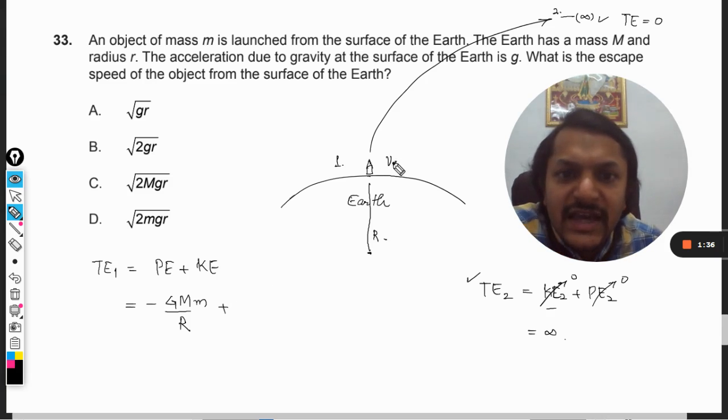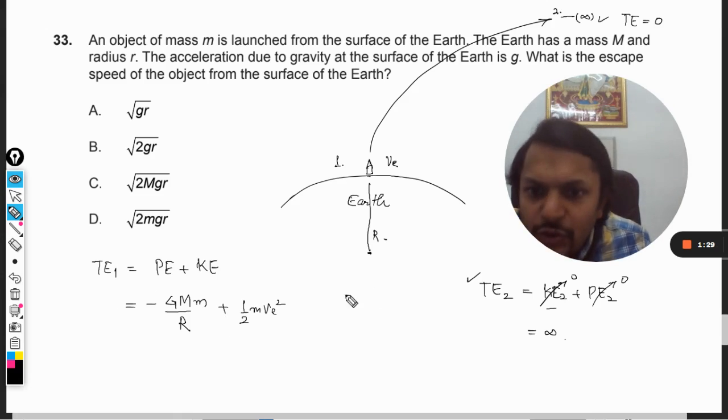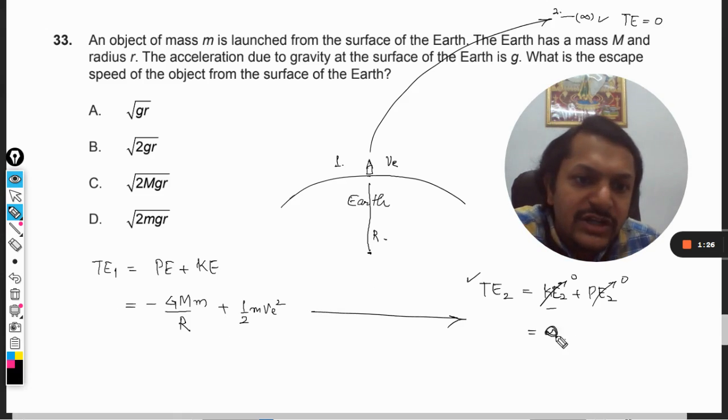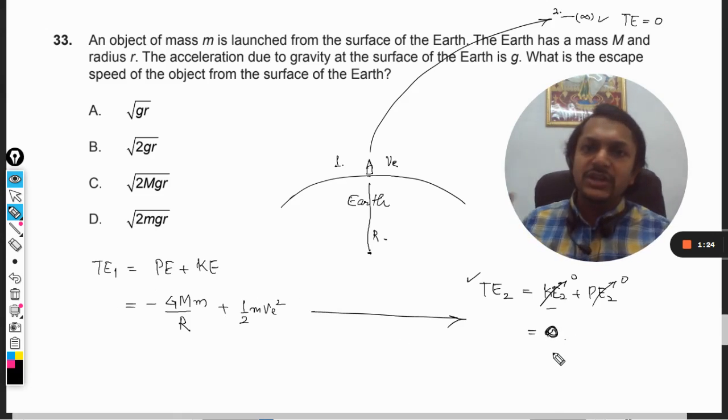Plus kinetic energy. Now we have to give some kinetic energy - let us say we have given it escape velocity, that is VE. So the kinetic energy will be half M VE squared. Now this total energy should be equal to this total energy which is coming out to be equal to 0.